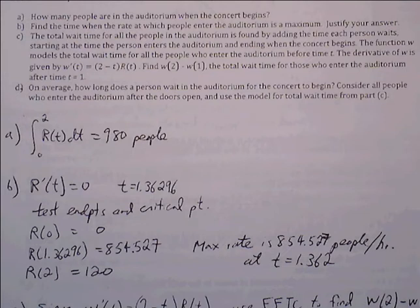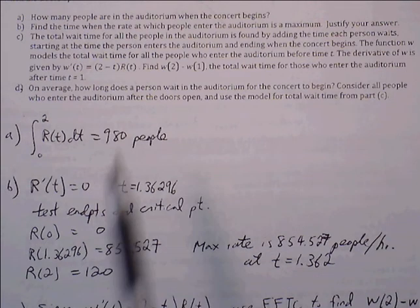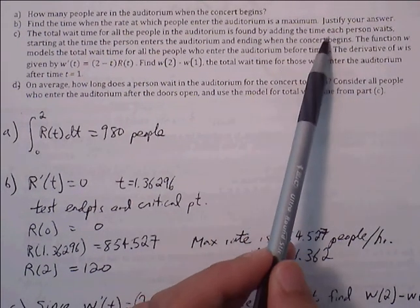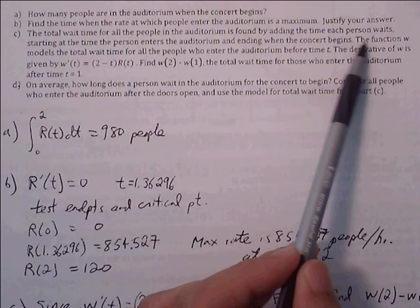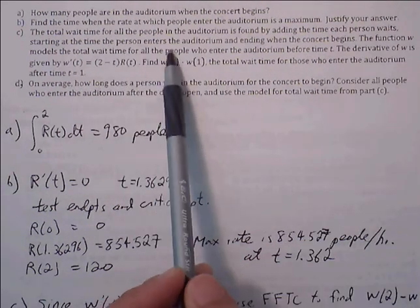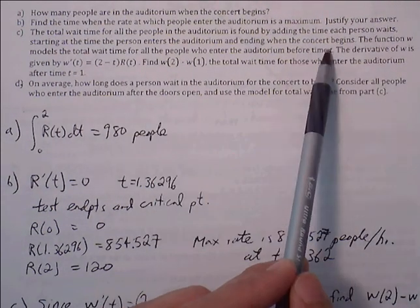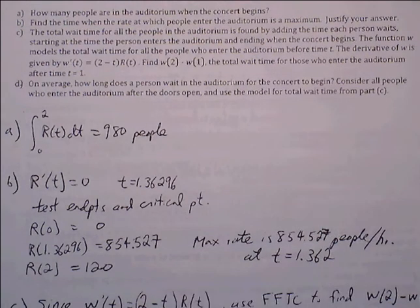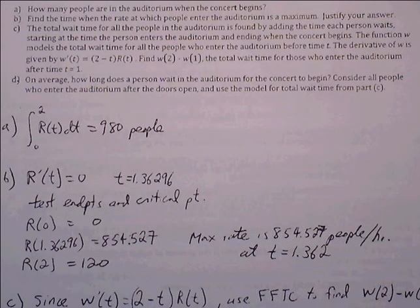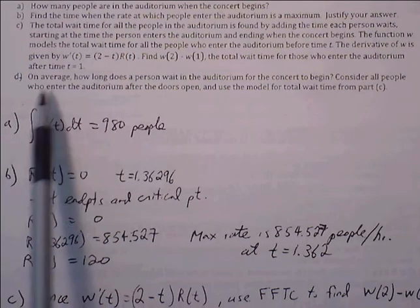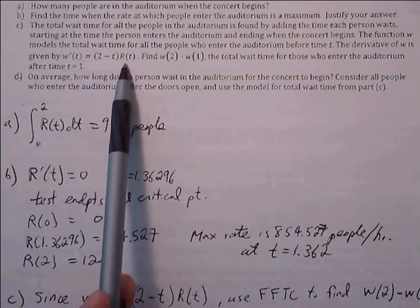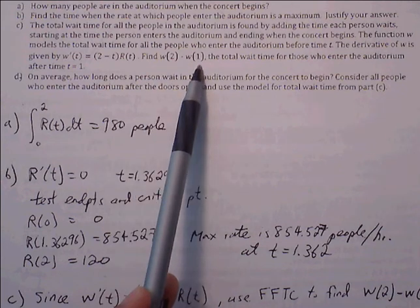Part C: The total wait time is found by adding the time each person waits, starting at the time the person enters the auditorium and ending when the concert begins. The function W models the wait time for all people who enter the auditorium before time T. The derivative is given by W prime equals 2 minus T times R of T. Find W of 2 minus W of 1.